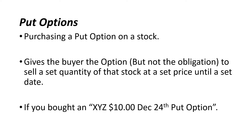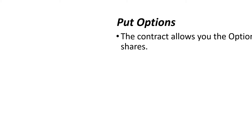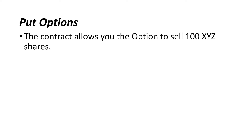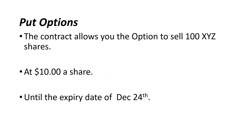Let's look at an example. If you bought an XYZ $10 December 24th put option, the contract would allow you the option to sell 100 XYZ shares — because the standard contract size on the US market is 100 shares. The price that you could sell the shares at would be $10 a share, and the expiry date would be December 24th, so you have until December 24th to actually sell those shares.